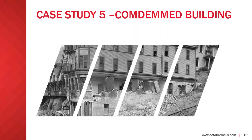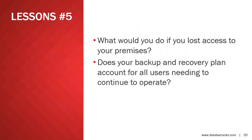This wasn't a small business in an old industrial building — it was a large white collar professional services business operating out of a rather old building in the City of London. Again, one of those things that probably we think wouldn't happen to us certainly can and does happen to people. The lessons here are: what would you do if you lost access to your premises? Does your plan account for everyone using it? If you're talking about an extended outage, at what point do you bring everyone back in?